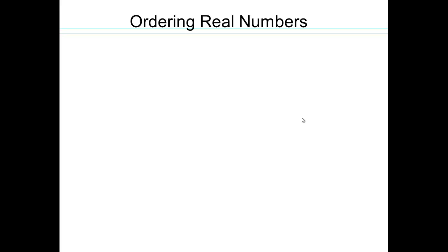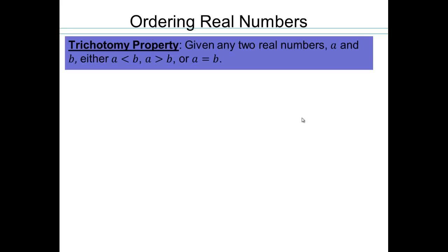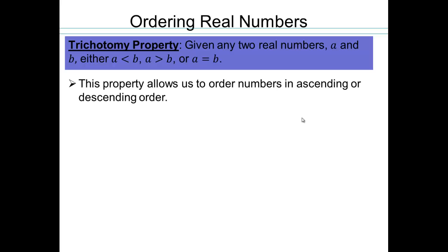Continuing, we're going to look at how to order real numbers — all real numbers, not just rational numbers. So given any two real numbers, either they are equal to each other, or one is bigger than the other. This is called the trichotomy property of real numbers. This property allows us to order numbers from smallest to largest or largest to smallest — ascending or descending order. Descending means going from largest to smallest; ascending means going from smallest to largest.